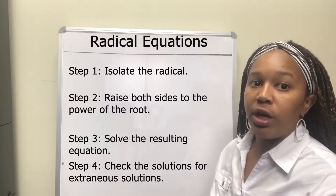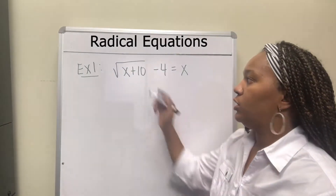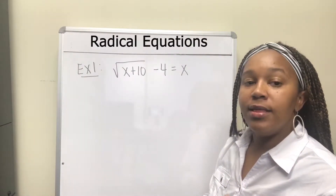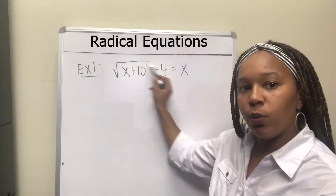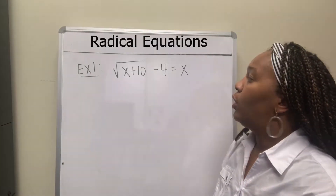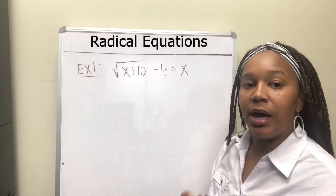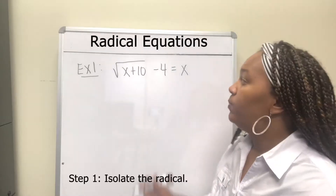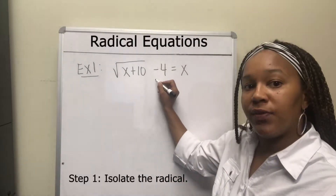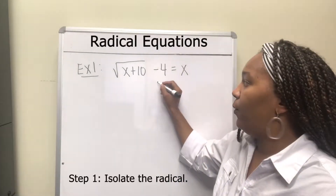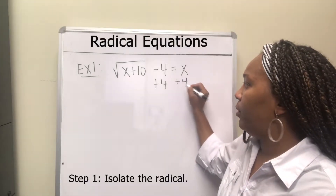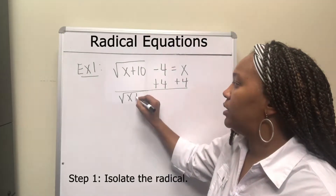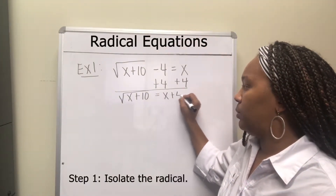Let's work an example. We want to solve the equation: the square root of x plus 10, minus 4, equals x. This is a radical equation because it has a square root in it. The first step is to isolate the radical by getting it on one side by itself. That means I need to get rid of this minus 4 by adding 4 to both sides. So we end up with the square root of x plus 10 equal to x plus 4.